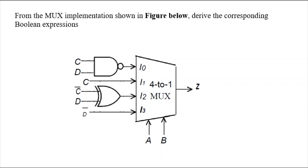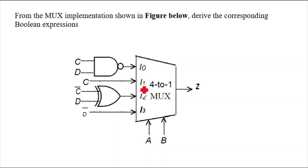In this video, I will show you how to solve this kind of question from MUX implementation: given a figure, derive the corresponding Boolean expression. This is your MUX, and the inputs are given. I-not is connected, meaning C and D are working as inputs and connected through a NAND gate.